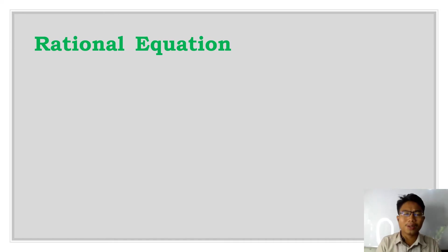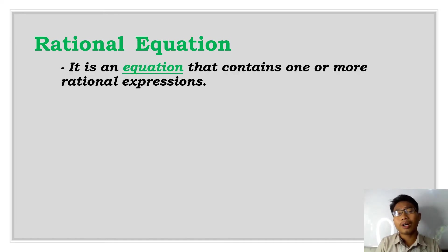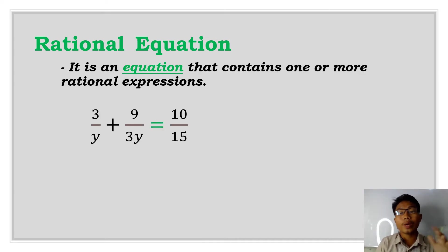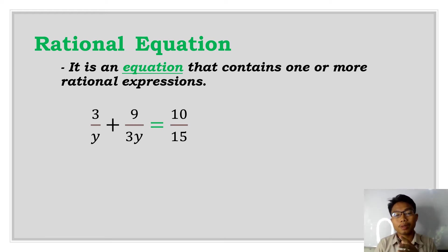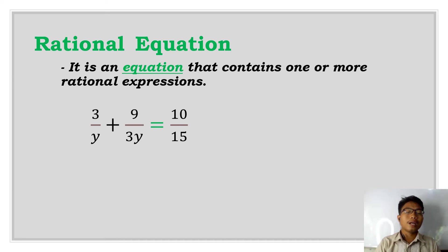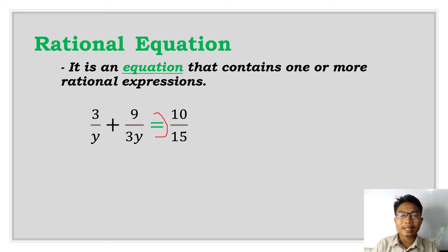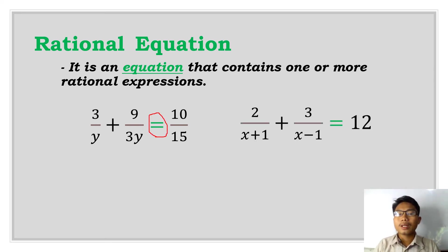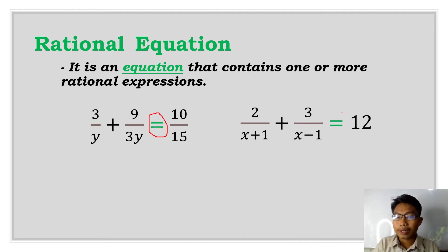Now let's take up rational equations. A rational equation is an equation that contains one or more rational expressions — you can see that it has an equal sign. For example, 3 over y plus 9 over 3y is equal to 10 over 15. Another example: 2 over x plus 1, plus 3 over x minus 1, is equal to 12. Both are rational equations because they have an equal sign.